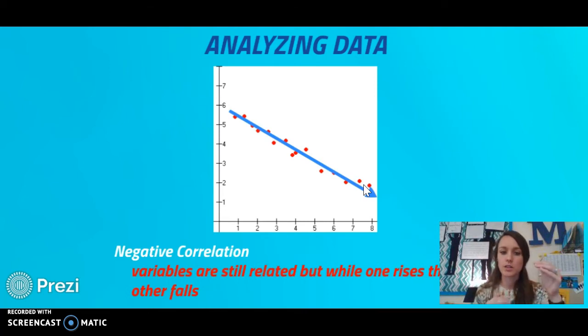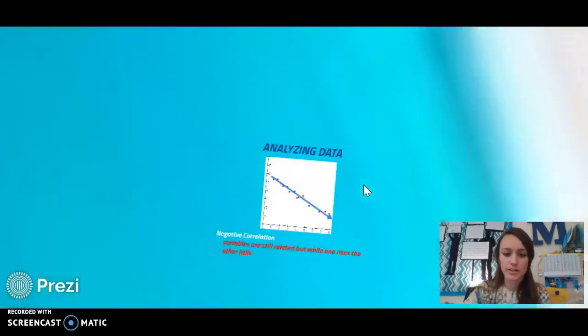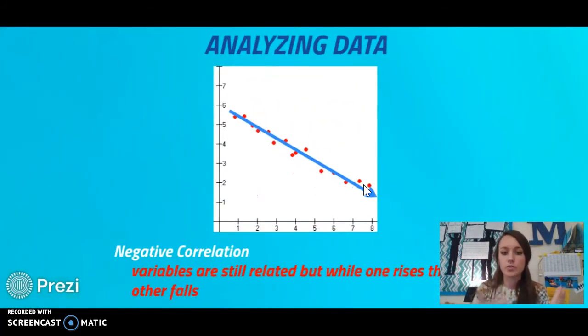A negative correlation is one variable is rising and the other is falling. They're still related to each other because they're working in that same pattern. As one goes up, the other goes down. An example of this would be the more miles you run, the less pounds you weigh. So they're working together, but one variable is going up while the other is going down.